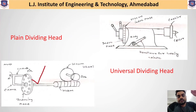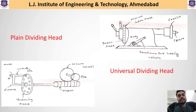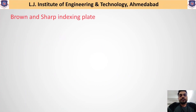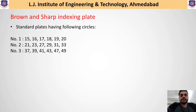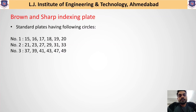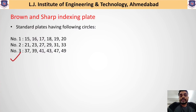The standard indexing plates are called Brown and Sharp indexing plates, available in three sets. On plate one: 15, 16, 17, 18, 19, and 20 holes. On plate two: 21, 23, 27, 29, 31, and 33 holes. On plate three: 37, 39, 41, 43, 47, and 49 holes. These are the different numbers of holes available on the standard indexing plates.